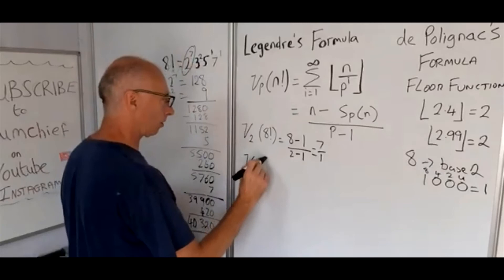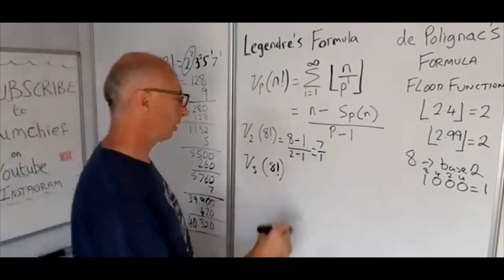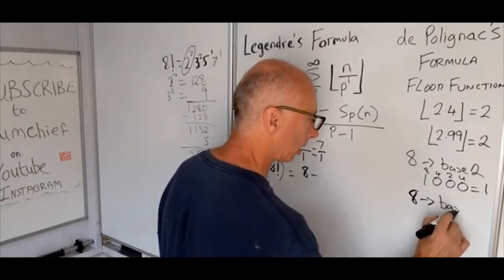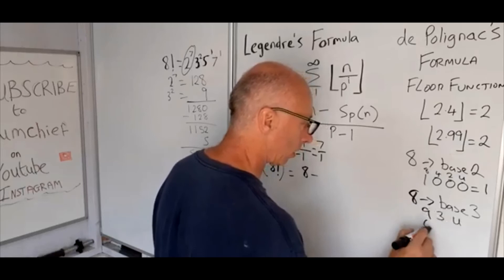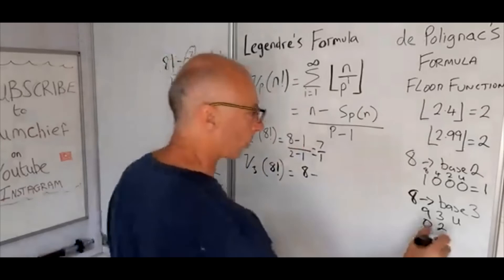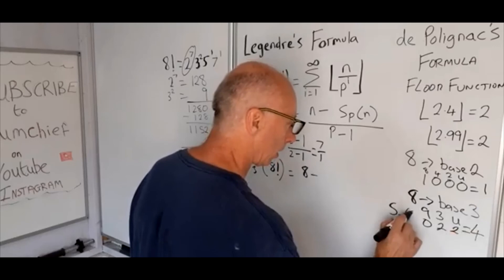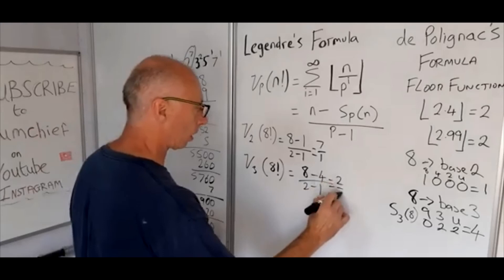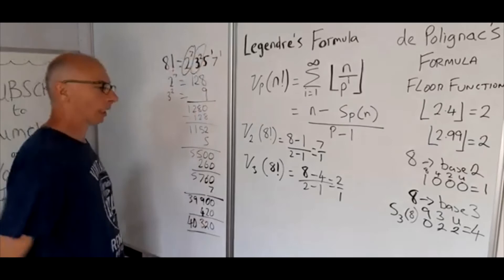So let's try with 3. So nu_3 of 8 factorial, the p-adic value of 8 factorial. We've got our 8 here, but now we need to work out S subscript 3 of n. So 8 in base 3: we've got units, 3's, 9's, so 0, 2 times 3 are 6 with 2 left over. So then S_3 of 8 is 4. So 8 minus 4 divided by 2 minus 1, that gives us 2 over 1, which is going to be 2. So check, 3 works.